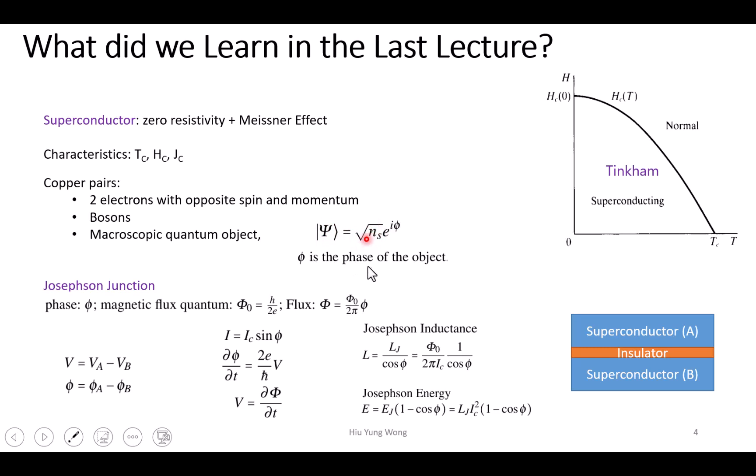You have the amplitude and the phase. The square of the amplitude is the probability of finding the Cooper pairs. So ns is in the order of 10^23 per cm³. This is just the density of the electrons, but we pair them up.